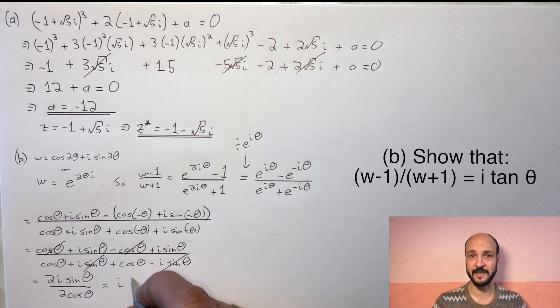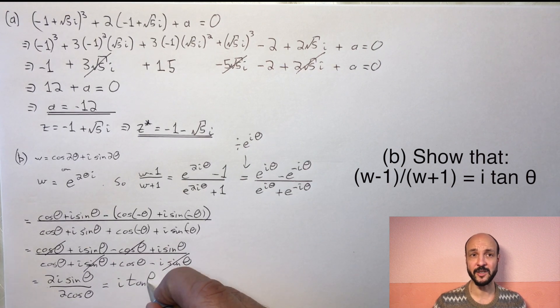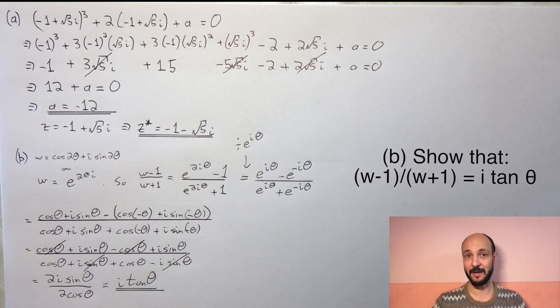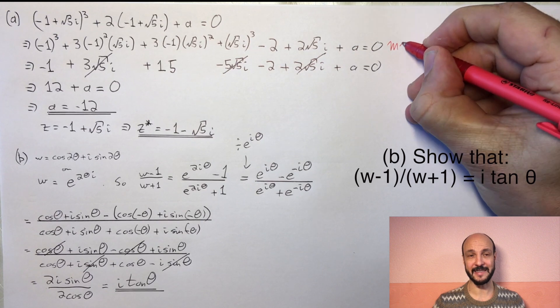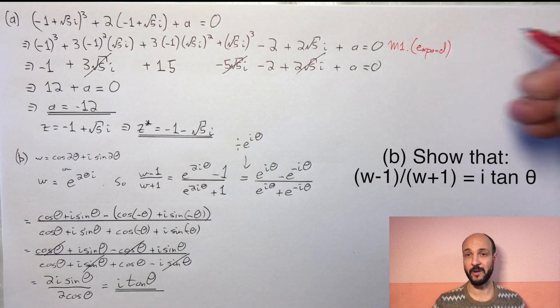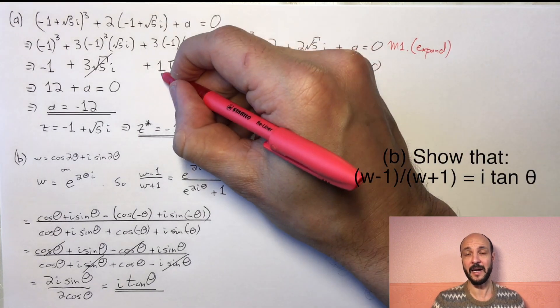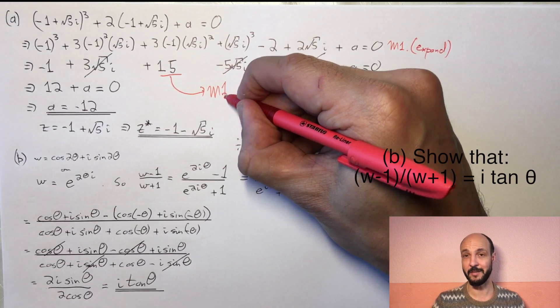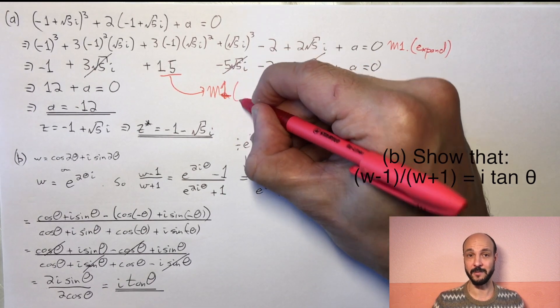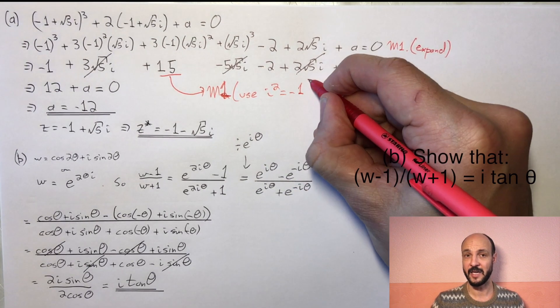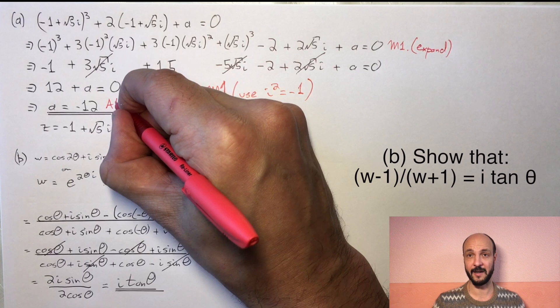So let's look at where the marks are assigned on the first question. We get one method mark for expanding out the cubic fully. And then we get a second mark if at some point in our working we've used the fact that i² = -1. We've then got two accuracy marks, one for getting a = -12 and then a straightforward one at the end for saying that the other imaginary root is -1 - √5i.